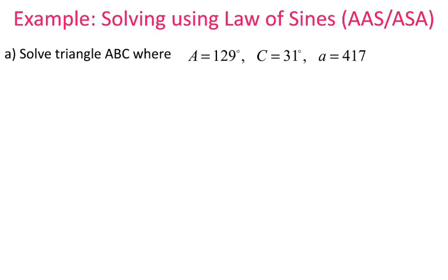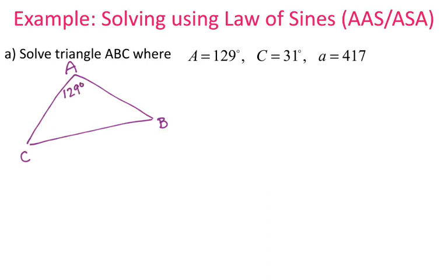I'm going to start by drawing a triangle with vertices A, B, and C. Angle A is 129 degrees, angle C is 31 degrees, and side a is 417. When it says to solve the triangle, you're looking for all of the missing pieces: angle B, side c, and side b.